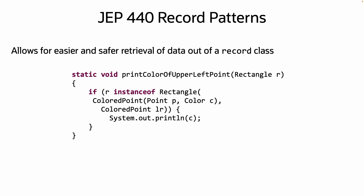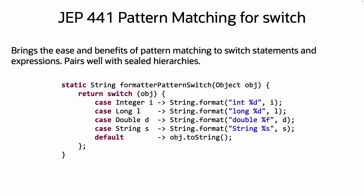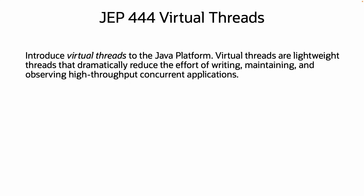Record patterns provide a quick way of extracting data out of a record based on its components. Record patterns can even be nested, like in this example. Pattern matching for switch brings the ease and benefits of pattern matching to switch expressions and statements. Record patterns covered in JEP 440 can be included in switch as well.